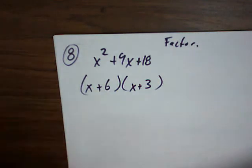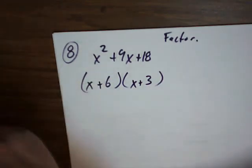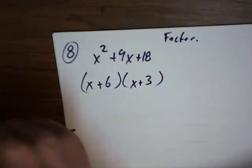But if you're talking about the AC method, then that's whenever you have a number in front. So number 11 would work.